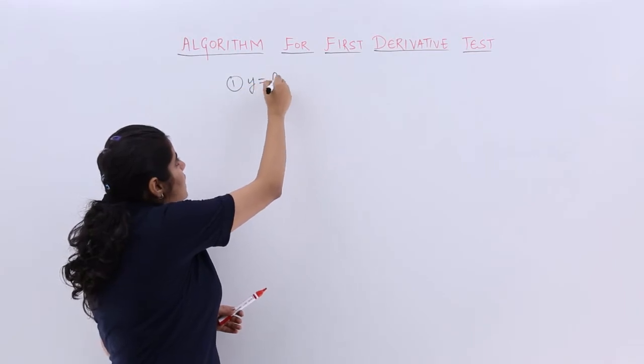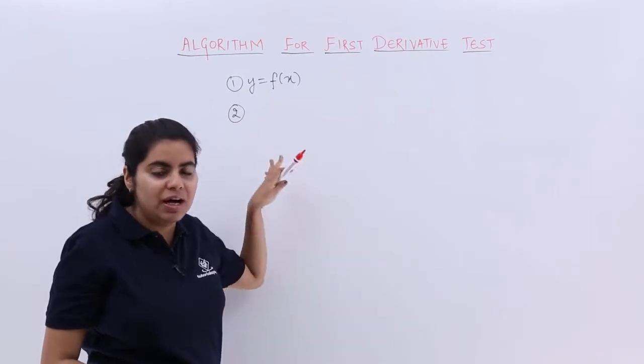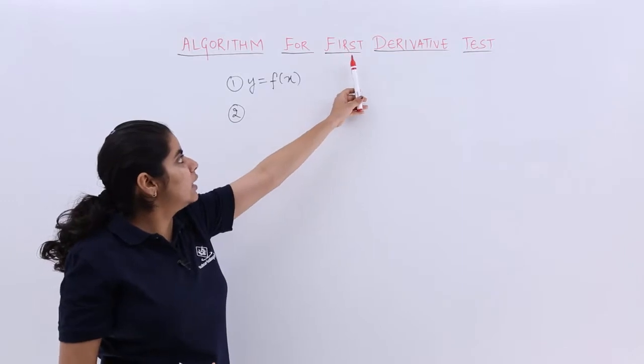The first step would be: whatever function is given to you, you have to assume it as y is equal to f of x. After you have assumed that y equals f of x for that function, then you have to find out the derivative.